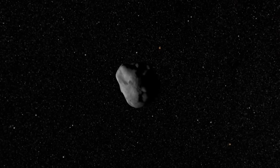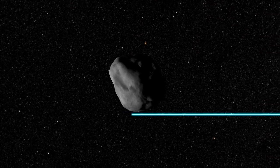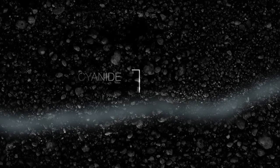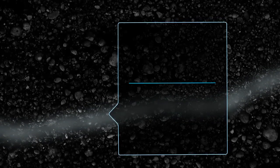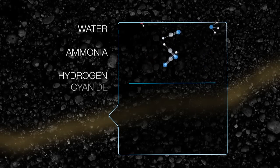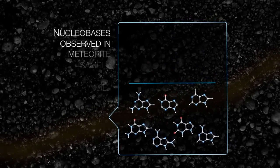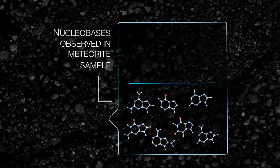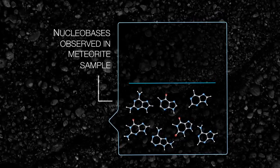The third reason why we think these nucleobases are extraterrestrial in meteorites is that in the laboratory, we study reactions of hydrogen cyanide. When we extract the products from these hydrogen cyanide reactions, we also get nucleobases. We actually get a similar suite of nucleobases to what's found in the meteorite.